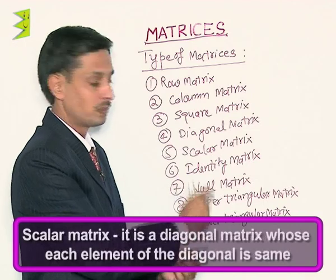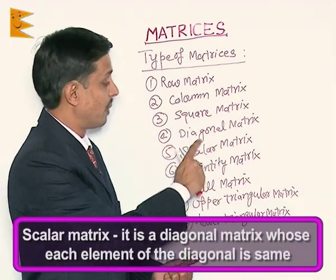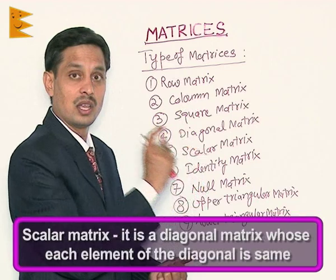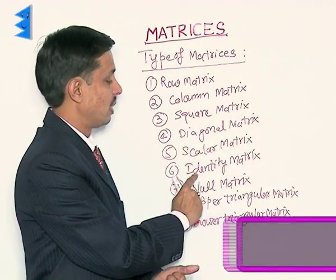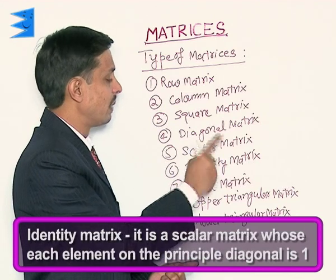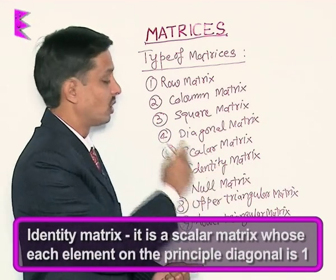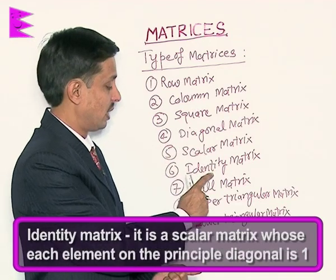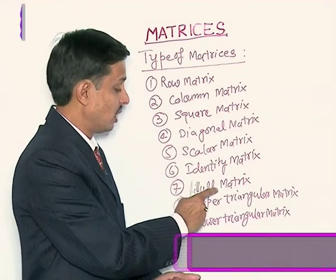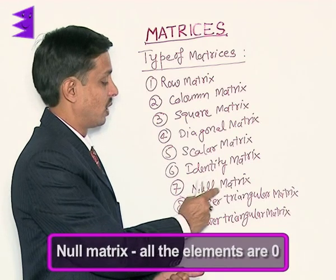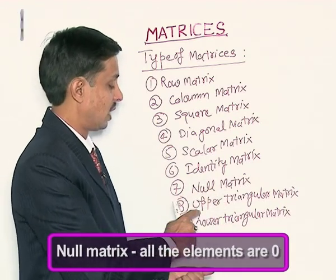What is a scalar matrix? A scalar matrix is a diagonal matrix whose each element of the diagonal is the same equal constant. Identity matrix: an identity matrix is that scalar matrix whose each element on the principal diagonal is 1. Null matrix: even a rectangular or square matrix whose all elements are 0 is known as the null matrix.